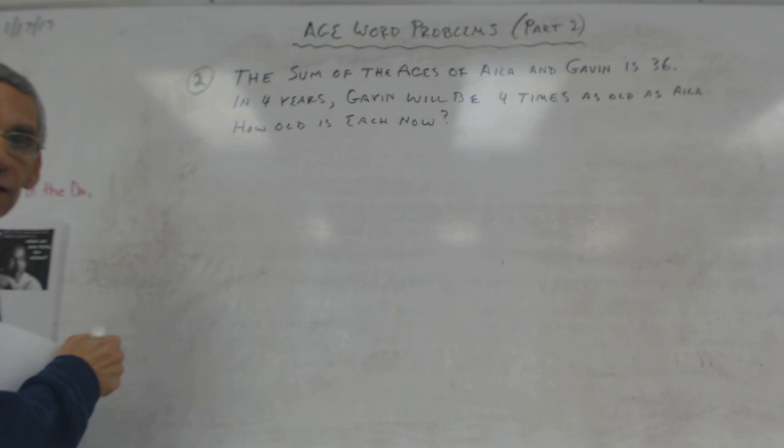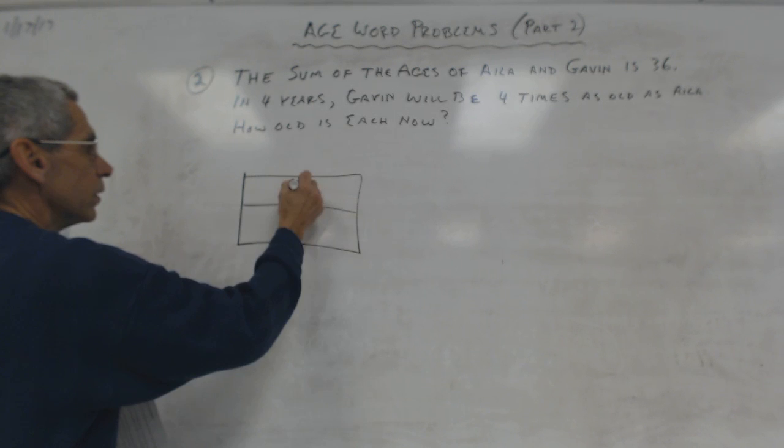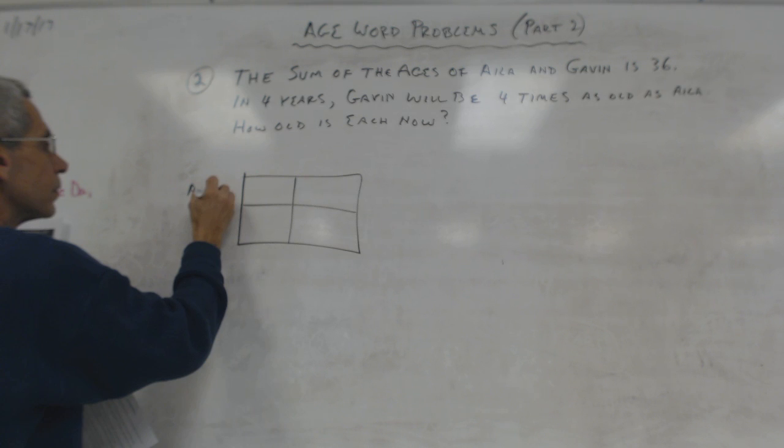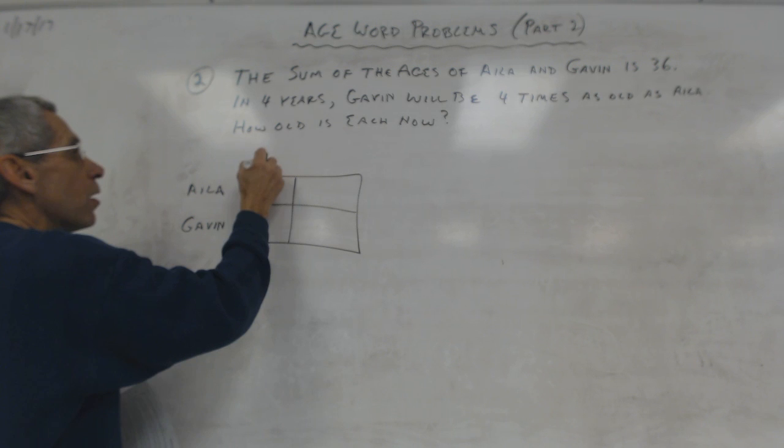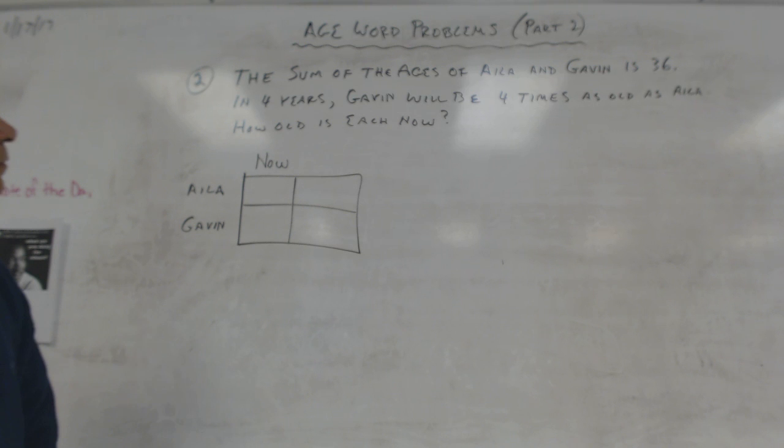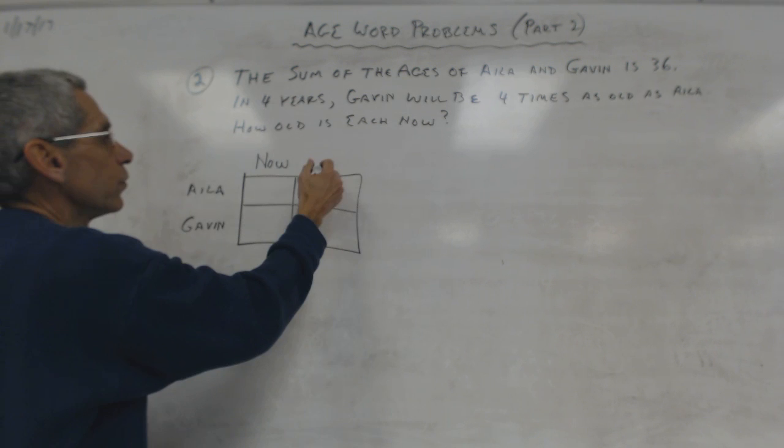Let's do our box again. We've got Isla and Gavin. What we have now. What am I going to have for this column? Plus four, right? In four years, plus four.